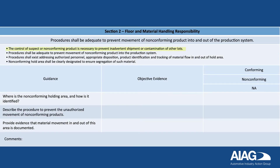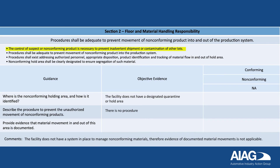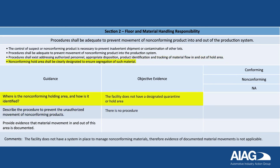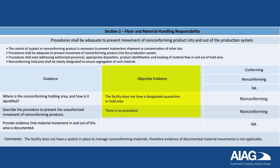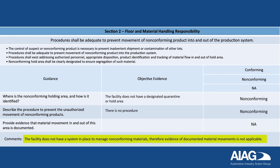Now let's look at Section 2. The control of suspect or non-conforming product is necessary to prevent inadvertent shipment or contamination of other lots. Procedures shall be adequate to prevent movement of non-conforming product into the production system. Procedures shall exist addressing authorized personnel, appropriate disposition, product identification, and tracking of material flow in and out of the hold area. The non-conforming hold area shall be clearly designated to ensure segregation of such material. In this example, the facility lacks the required hold area and procedure to prevent unauthorized movement of non-conforming products, earning a rating of non-conforming for those conditions. Because the facility does not have such a system in place, evidence of documented material movements is not applicable.